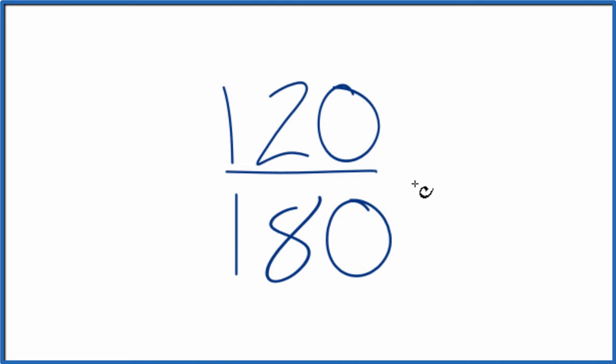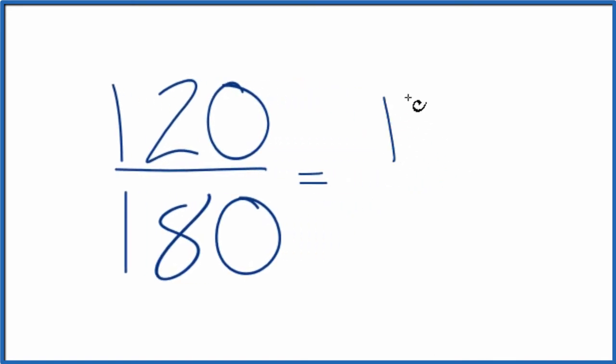So right off, I think what I'm going to do is divide 120 by 10 and 180 by 10. So 120 divided by 10, that's 12. 180 divided by 10, that's 18.